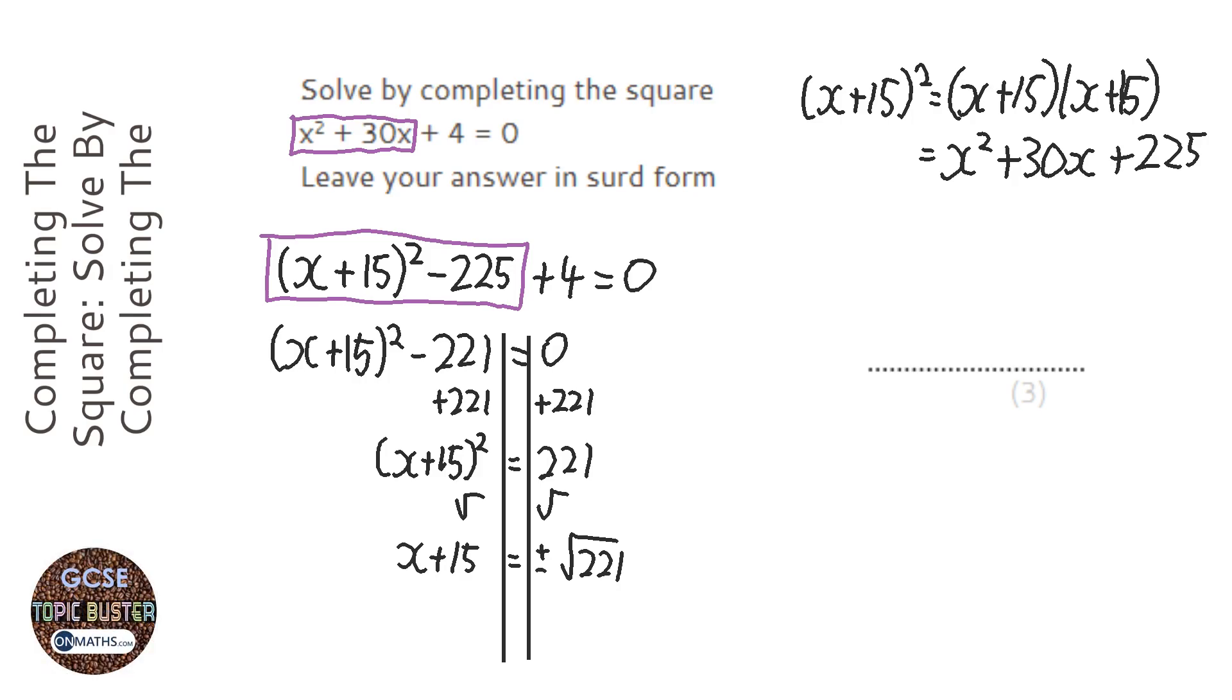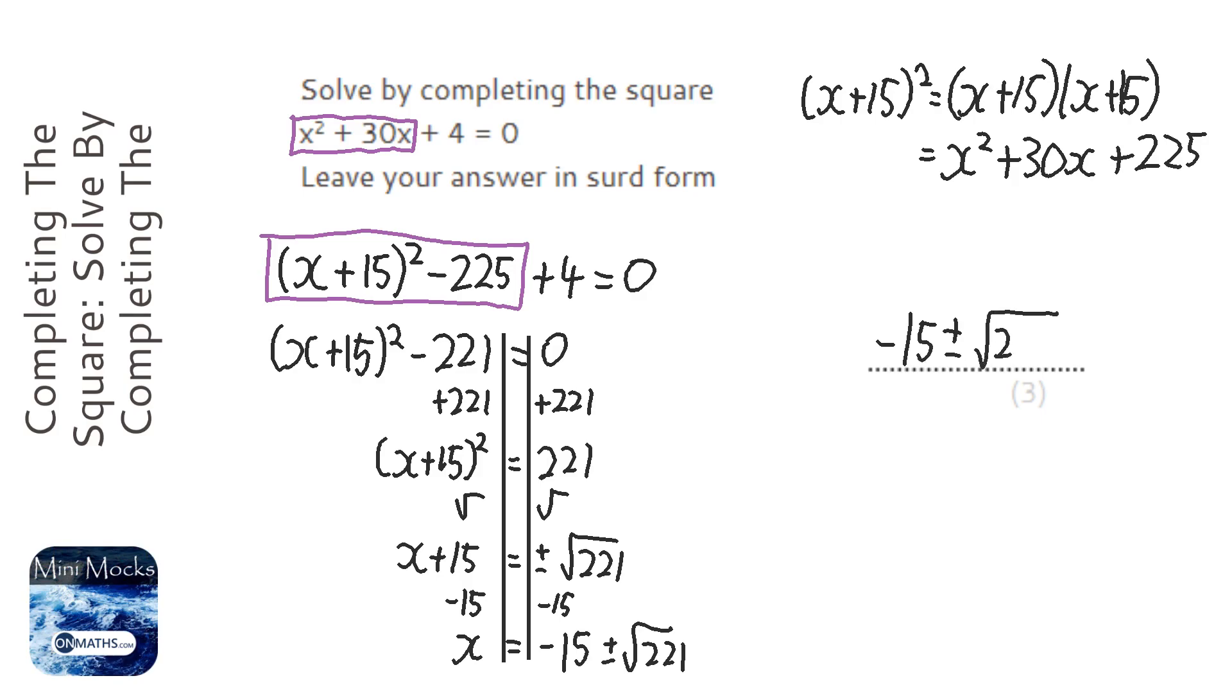Next thing we do: minus 15 both sides, and so we end up with x equals—and because that plus or minus is there it's sometimes useful to put the number first—so minus 15 and then plus minus root 221. So we've got -15 ± √221. If you put that minus 15 afterwards, it might look like it's inside the square root, so it's sensible to put it first.